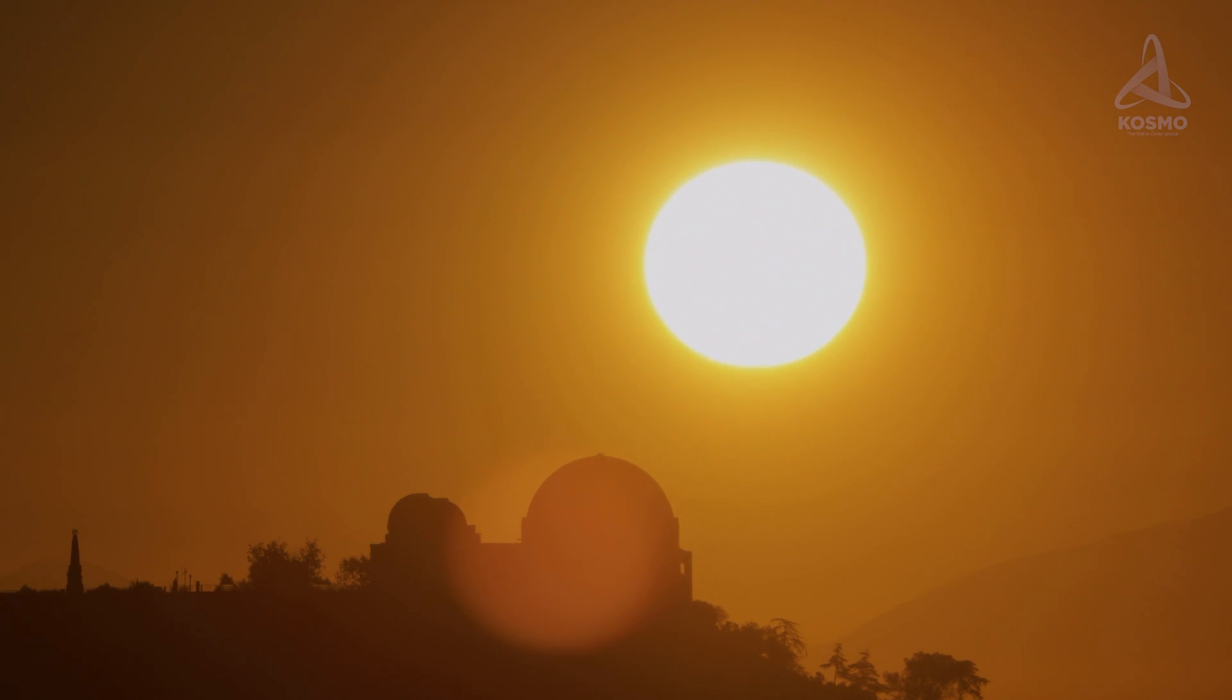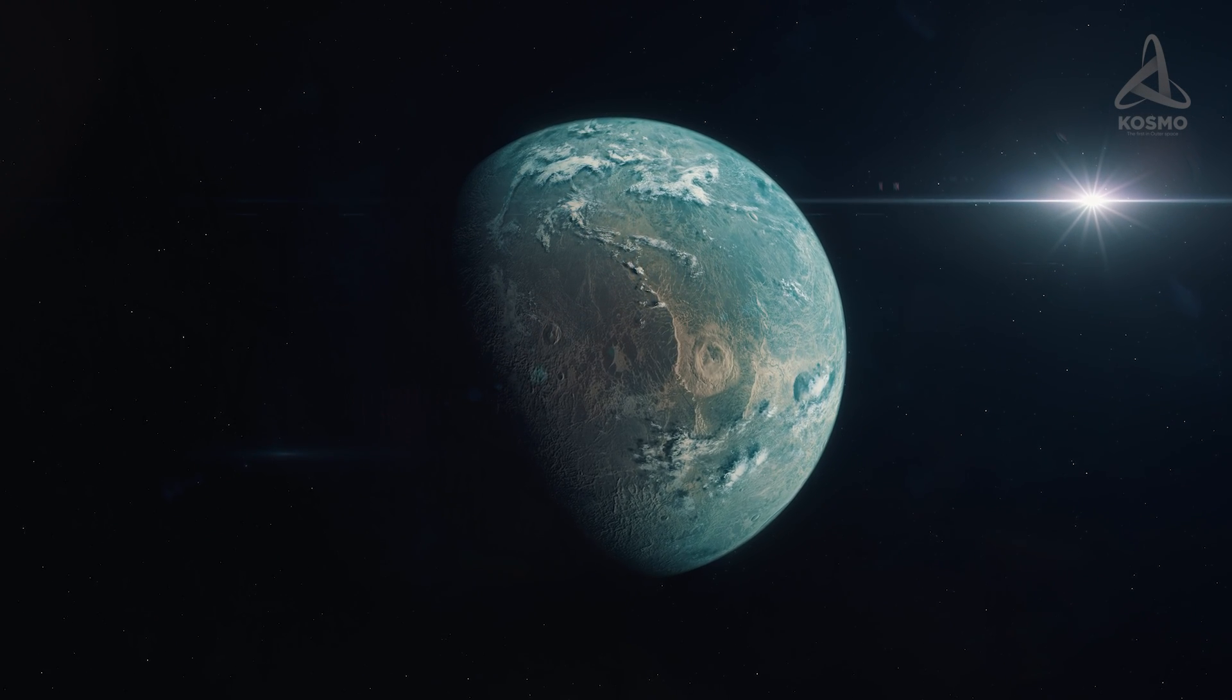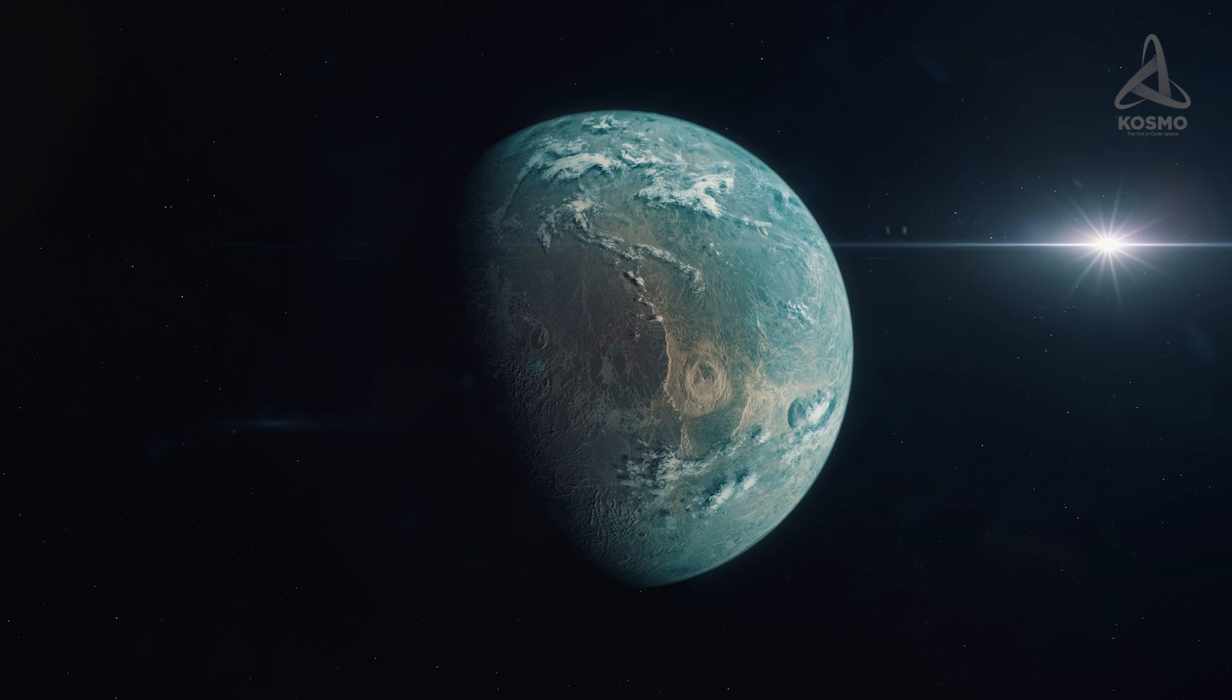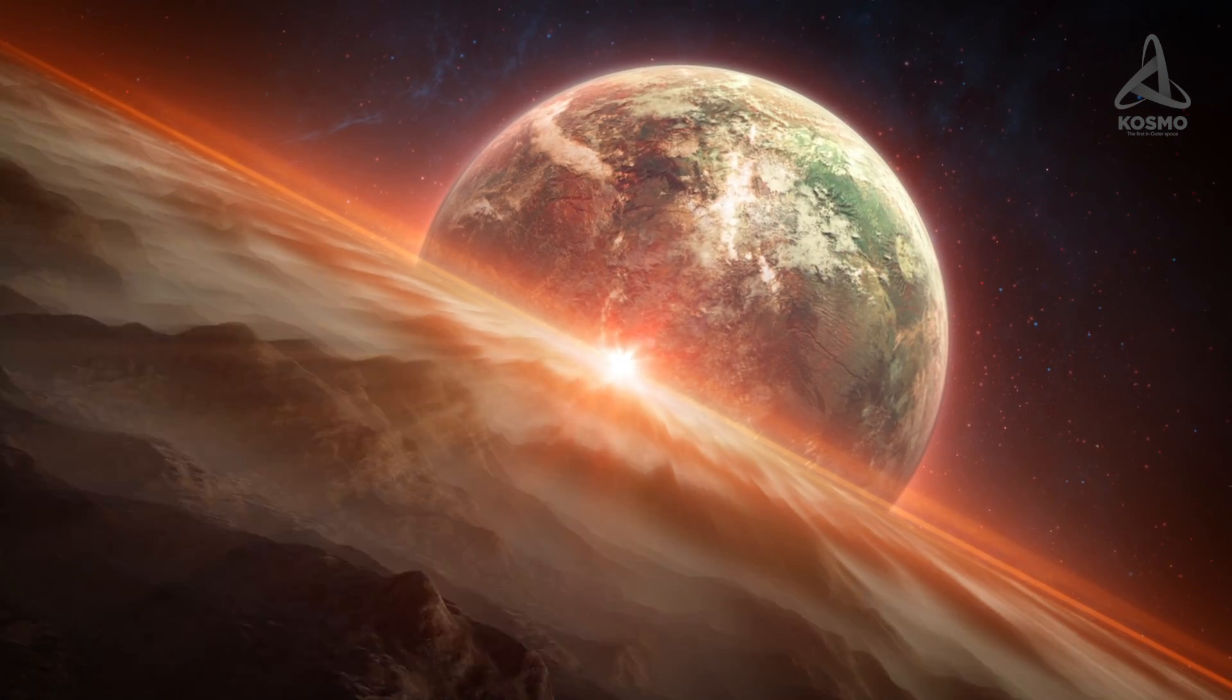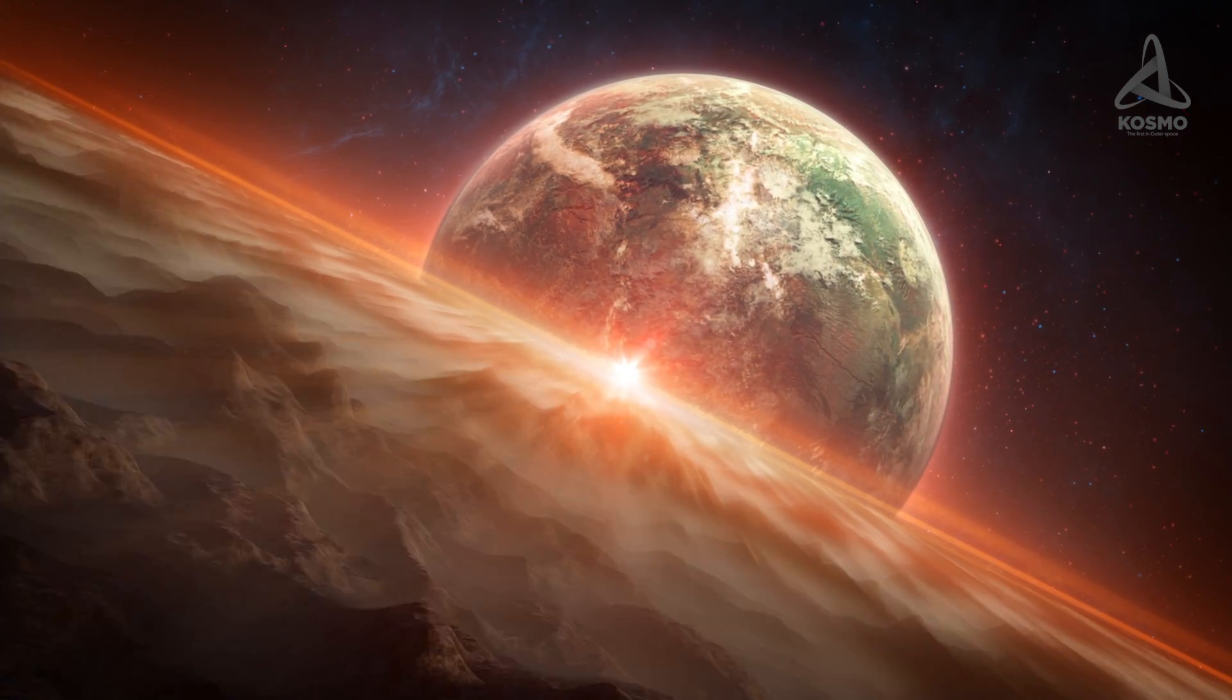Scientists do admit of the possibility of the existence of planetary systems around supergiants. But what with these stars' short lifespan and unstable conditions, the chances are almost negligible. At any rate, no confirmed exoplanets have so far been discovered in the environs of one.